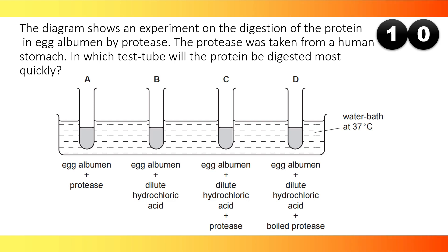The diagram shows an experiment on the digestion of the protein in egg albumin by protease. The protease was taken from a human stomach. In which test tube will the protein be digested most quickly? The answer is C.